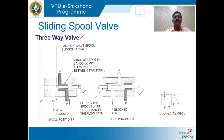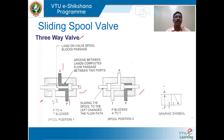In the first switching position — denoted by one square — P is connected with A and T is blocked. Each switching position is denoted by a square in the symbol.